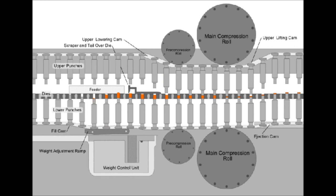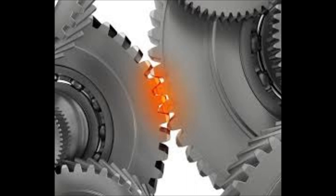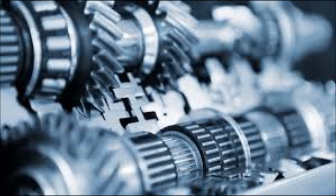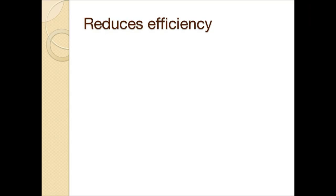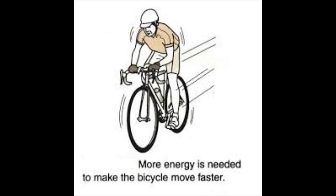Similarly, when we operate a mixer or a grinder for a few minutes, its jar becomes hot — heat produced by friction. When the moving parts of a machine rub together, a lot of heat is produced due to friction between them, and this heat may damage the machine gradually. Some of the energy supplied to run a machine is wasted in overcoming friction between its moving parts, and some energy is wasted as heat. This wastage of energy reduces the efficiency of the machine.